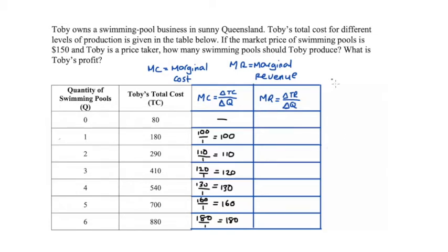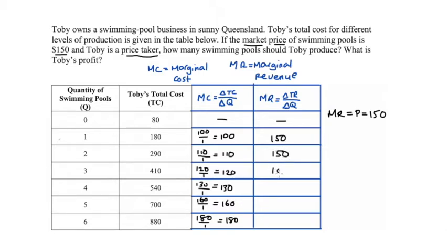Now we can find marginal revenue, which is the change in total revenue divided by the change in quantity. In this case, marginal revenue is simply equal to the price, which is $150. The question tells us the market price is $150 and that Toby is a price taker, meaning he cannot choose his own price — every pool he sells must be for $150. So each additional unit he produces and sells gives him a marginal revenue of $150, and I can fill in that column accordingly.